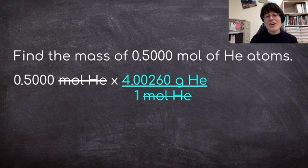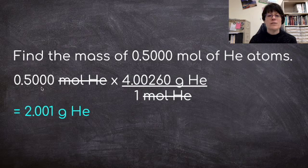Now, remember, we also have to remember our significant digit or figures rules. So when I do this problem, my answer better have 4 significant figures. So when I multiply these two numbers together, I get 2.001 grams of helium sticking to my 4 significant figures.